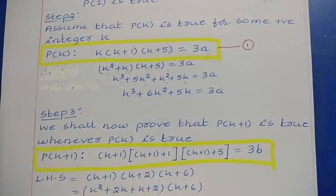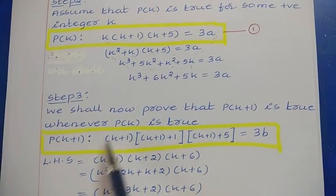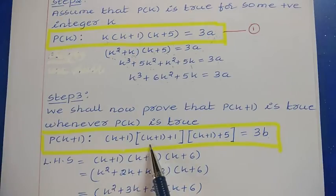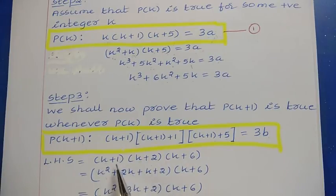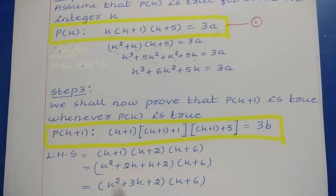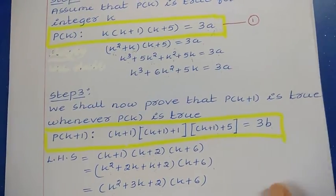As in previous problems, we take the left-hand side of P(k+1) and work towards the right-hand side. The left-hand side is (k+1)(k+2)(k+6). First multiply (k+1)(k+2): k²+2k+k+2 = k²+3k+2. Then multiply (k²+3k+2) by (k+6).